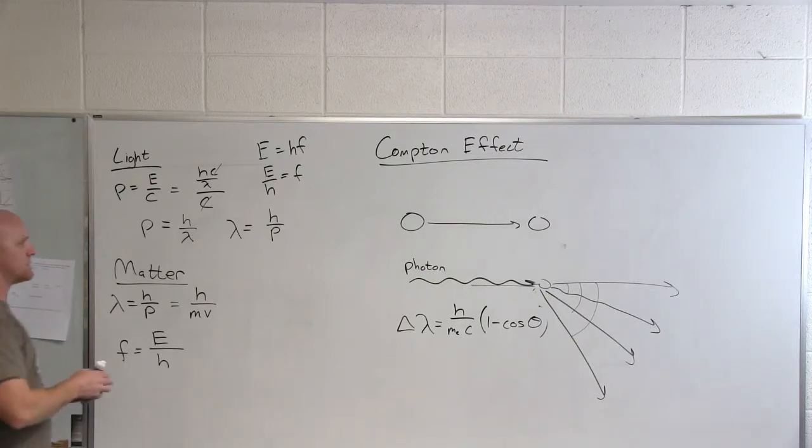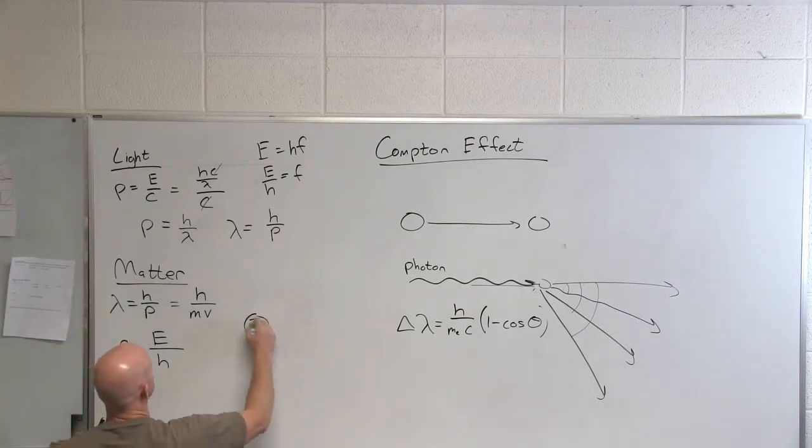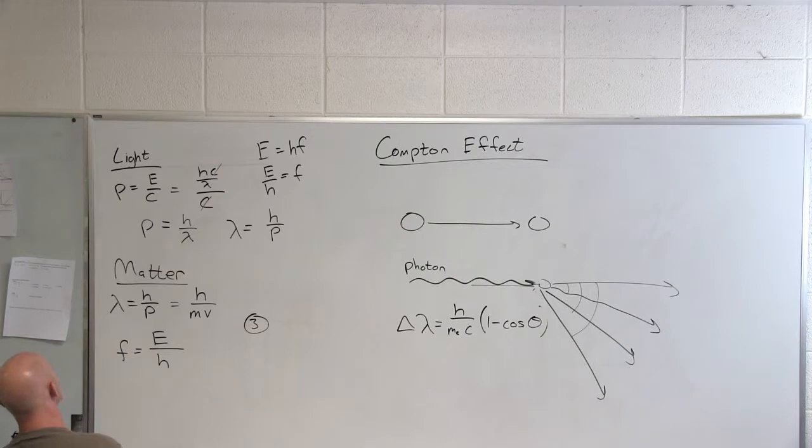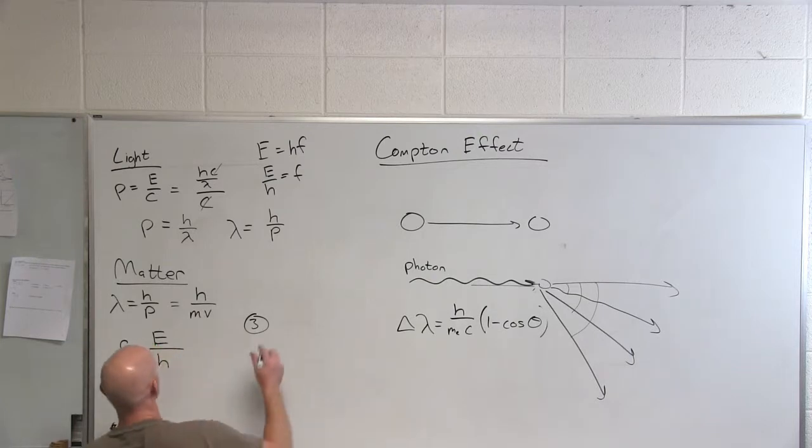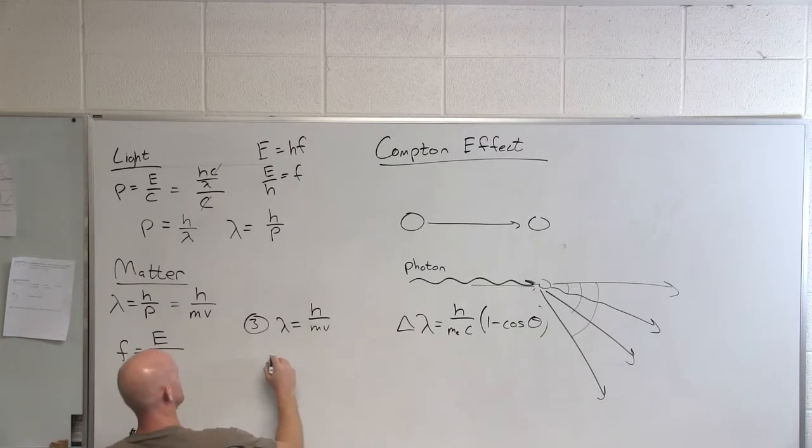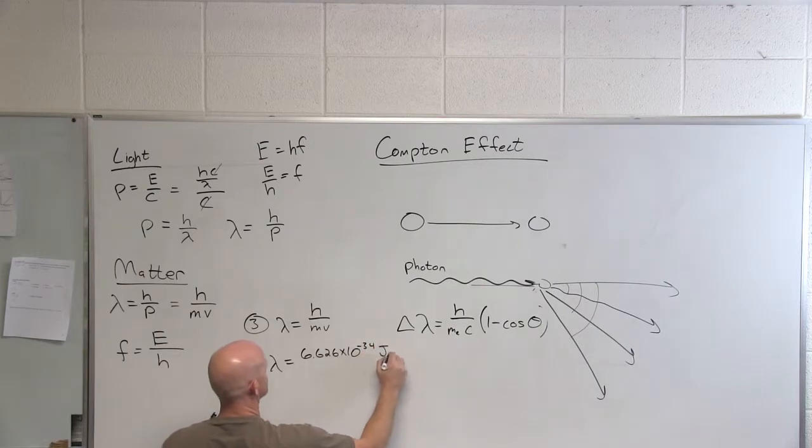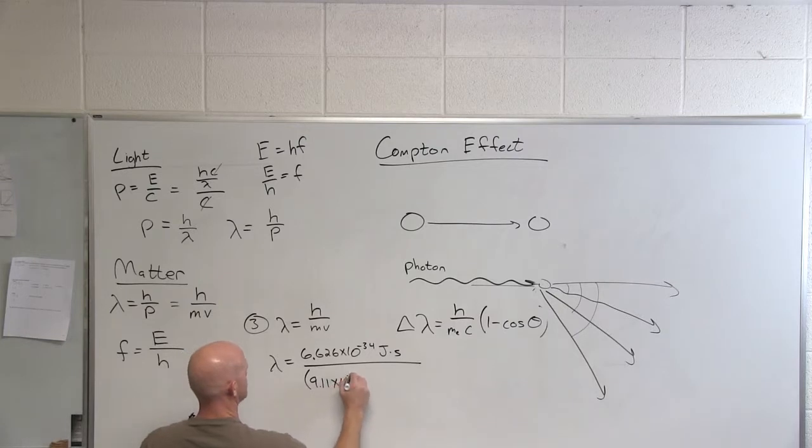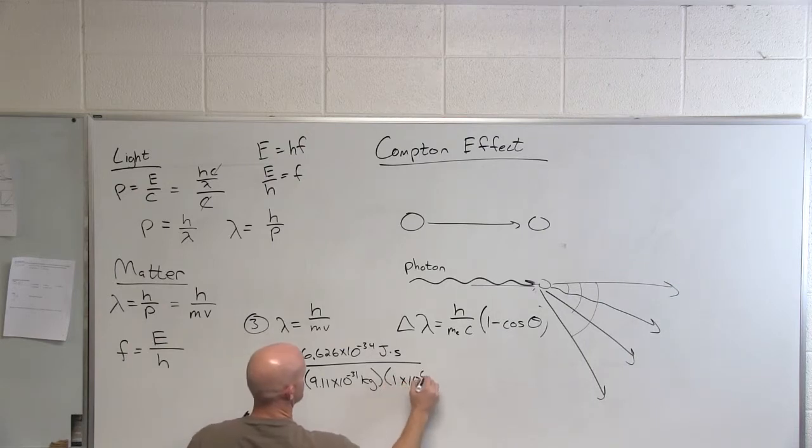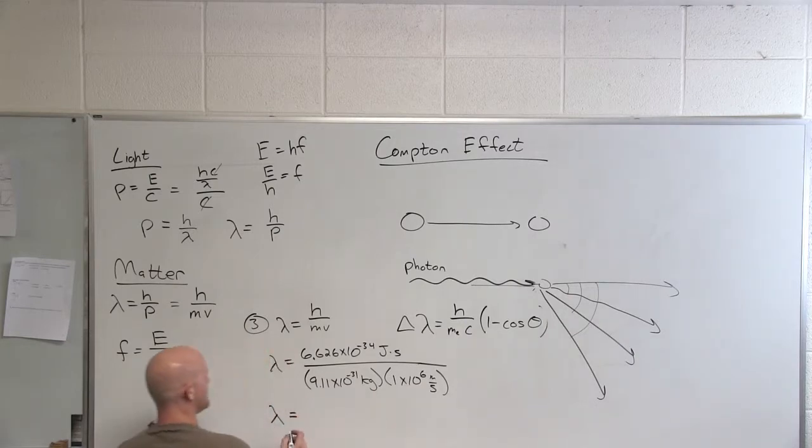Question number three on your handout: what is the wavelength of an electron moving with a velocity of 1 times 10 to the 6 meters per second? The mass of an electron is given for you there, and so simply, we're just going to solve lambda equals h over the momentum. Can somebody get me that wavelength?